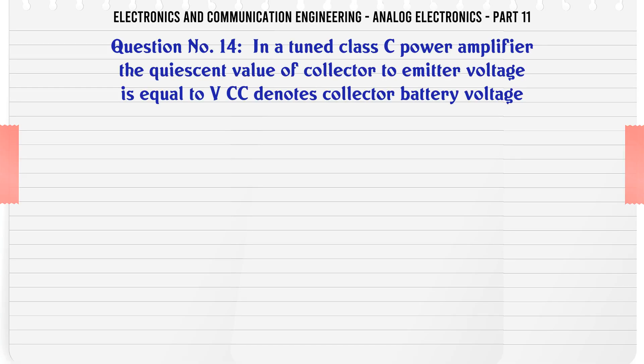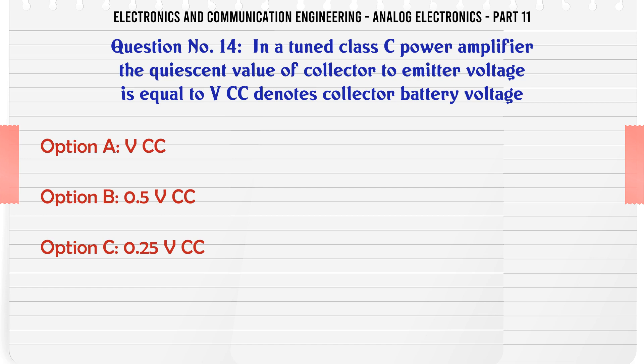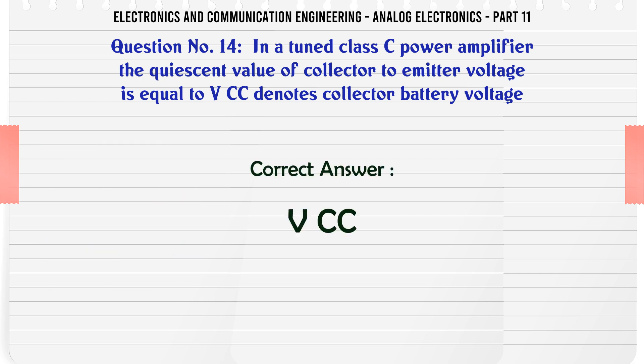In a tuned class C power amplifier, the quiescent value of collector to emitter voltage is equal to Vcc, where Vcc denotes collector battery voltage. A. Vcc. B. 0.5 Vcc. C. 0.25 Vcc. D. Either B or C. The correct answer is: Vcc.